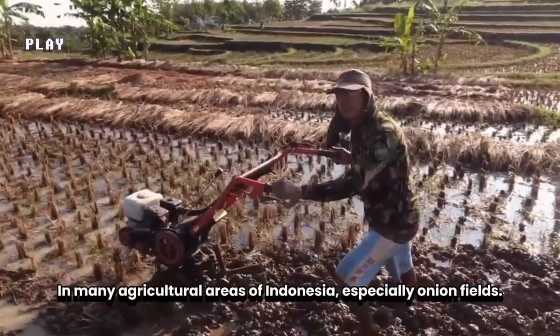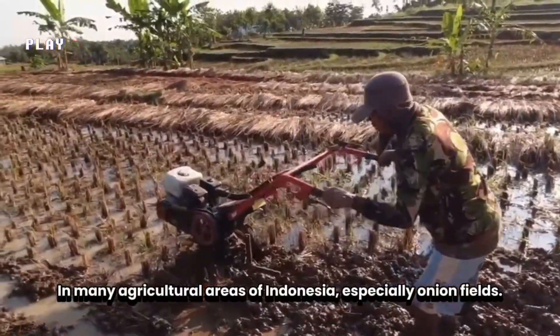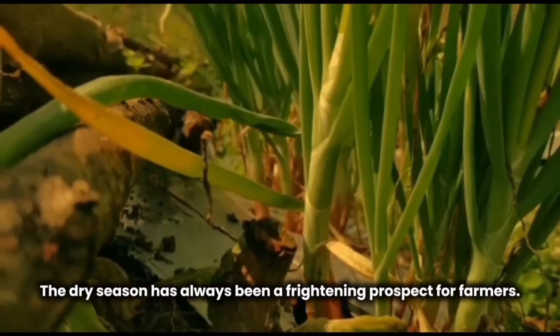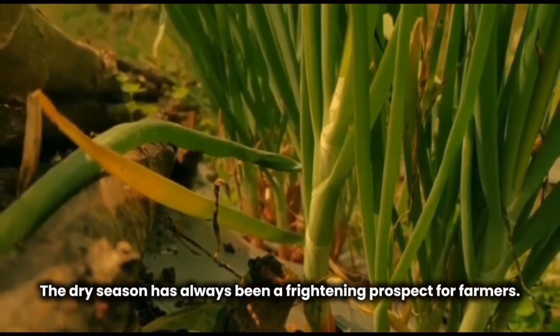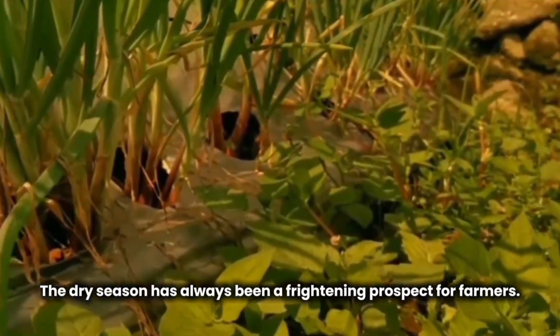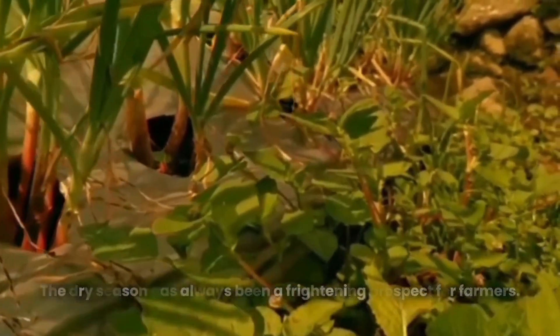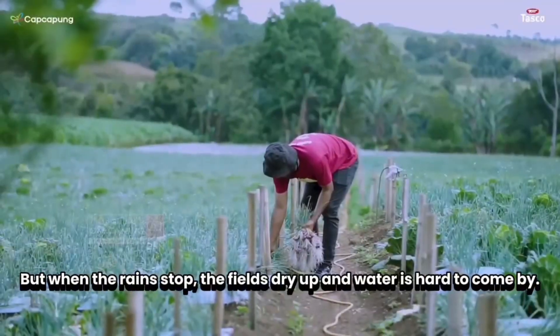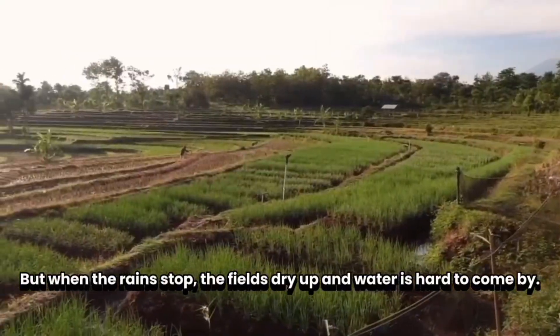In many agricultural areas of Indonesia, especially onion fields, the dry season has always been a frightening prospect for farmers. But when the rain stops, the fields dry up and water is hard to come by.